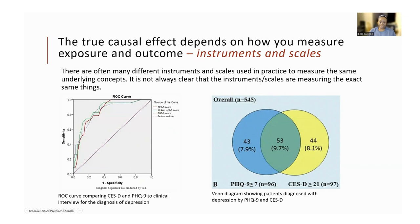You have the CESD score (Center for Epidemiologic Studies Depression score), originally a 20-item instrument, a 16-item CESD score, and the PHQ-9 (Patient Health Questionnaire). These three instruments are all used to assess patients for depression. You can see that the instruments perform differently at different thresholds — at a sensitivity of 20%, the CESD score performs slightly worse than the 16-item CESD score and the PHQ-9. So even though they're measuring the same underlying construct of depression, they perform differently at different sensitivity thresholds.